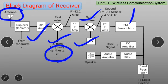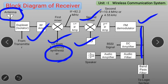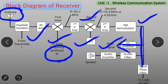The receiver uses down-conversion, not up-conversion. The signal goes to the FM demodulator. The transmitter uses phase modulation, and the receiver uses FM demodulation to demodulate the signal. The demodulated signal goes to a DC amplifier, which produces the RSSI — Received Signal Strength Indicator. Then the signal goes through an FM demodulator and audio filter, which filters and amplifies the audio output.